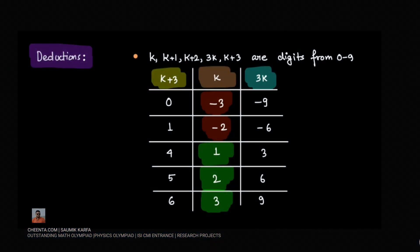Now with this information, we can make a chart for the possible values of k. First, k+3 can be 0, 1, 4, 6, or 5. Now we also know that k, k+1, k+2, 3k, and k+3 are single digits from 0 to 9. If k+3 is 0, then k becomes negative, which is not possible. Similarly, if k+3 is 1, then k is negative, which is not possible.